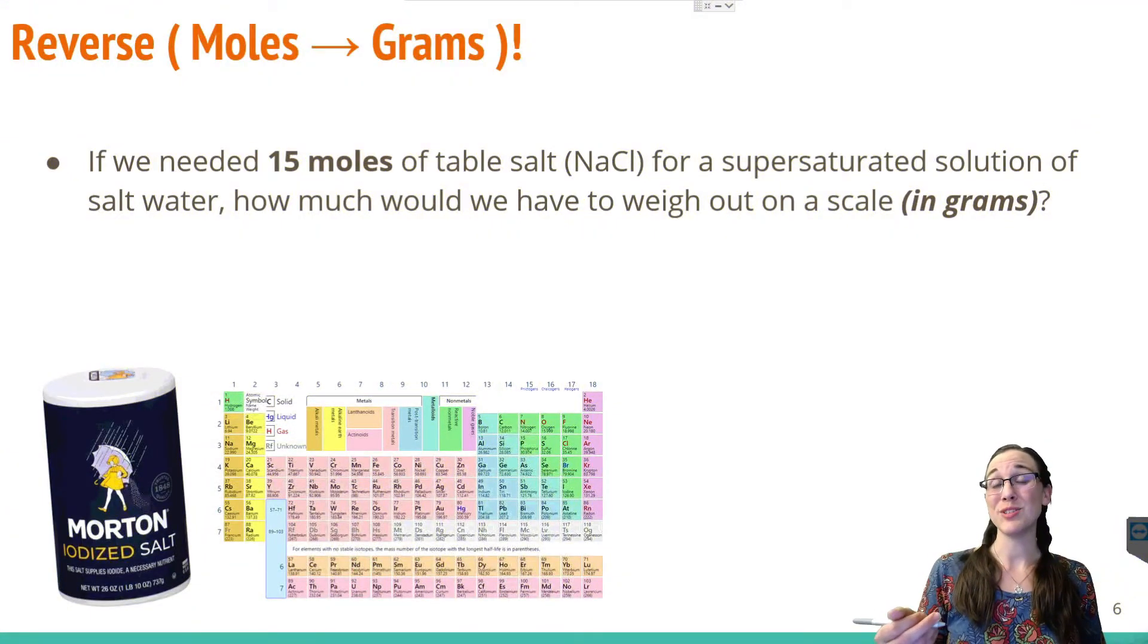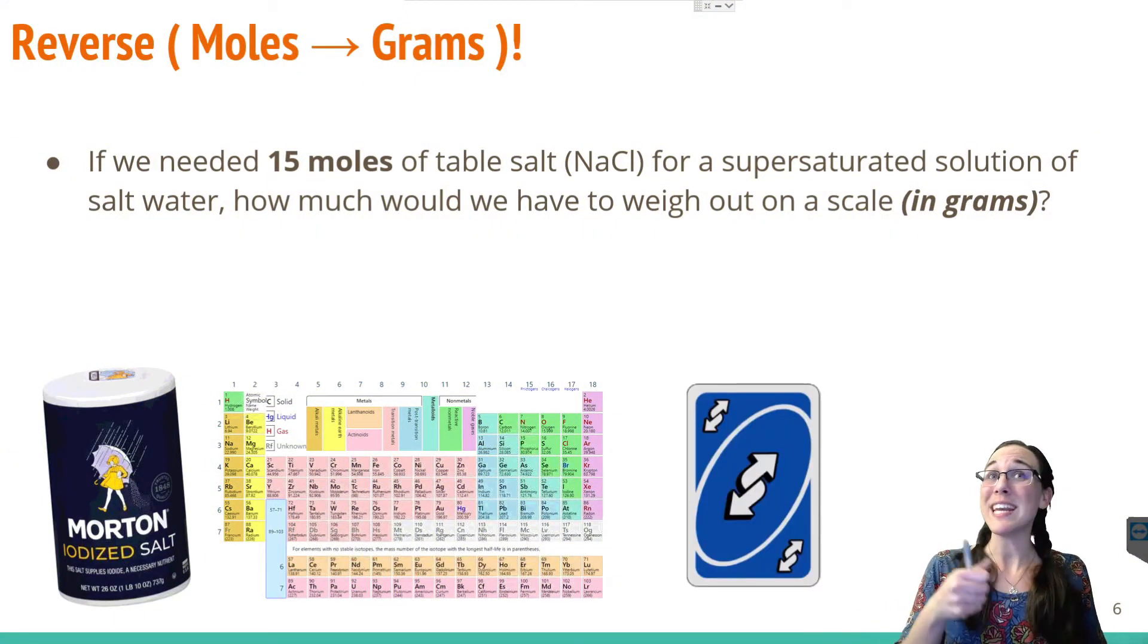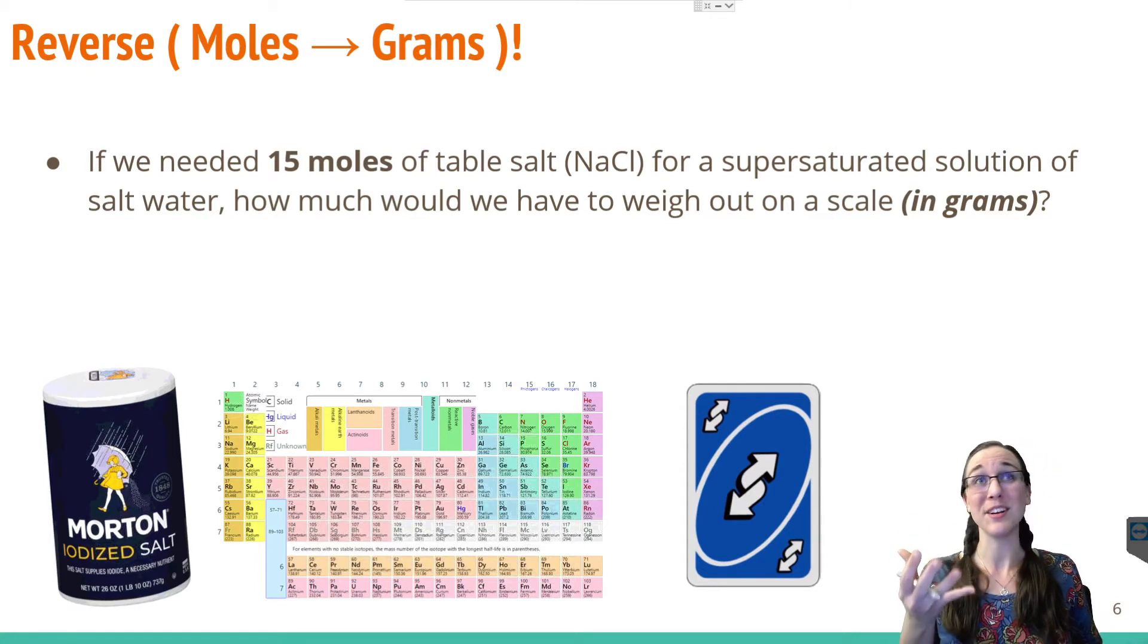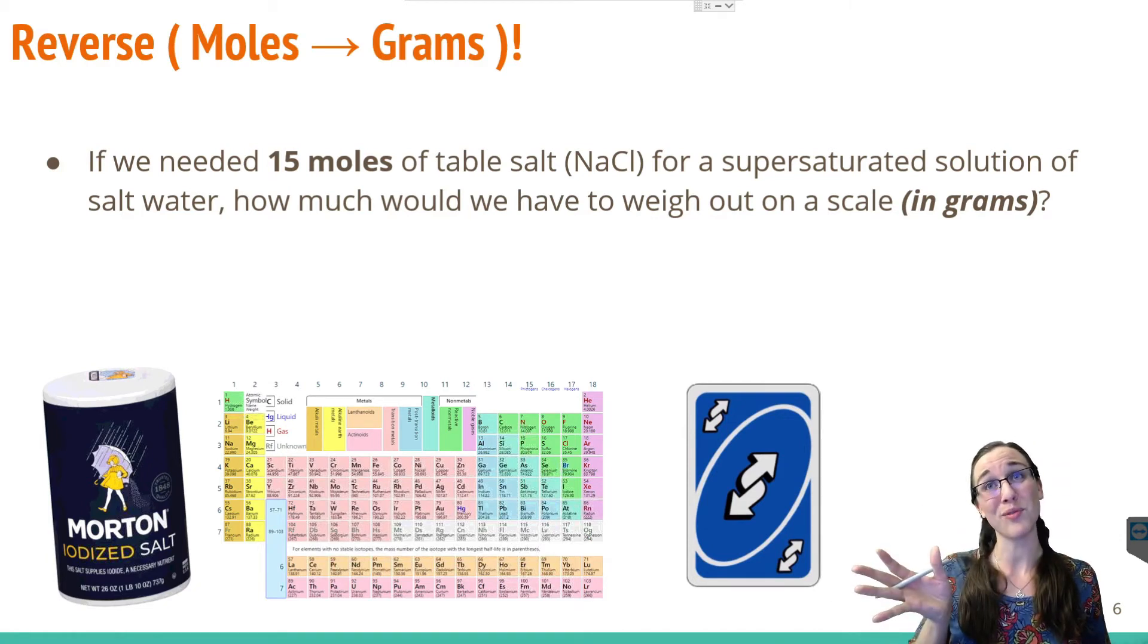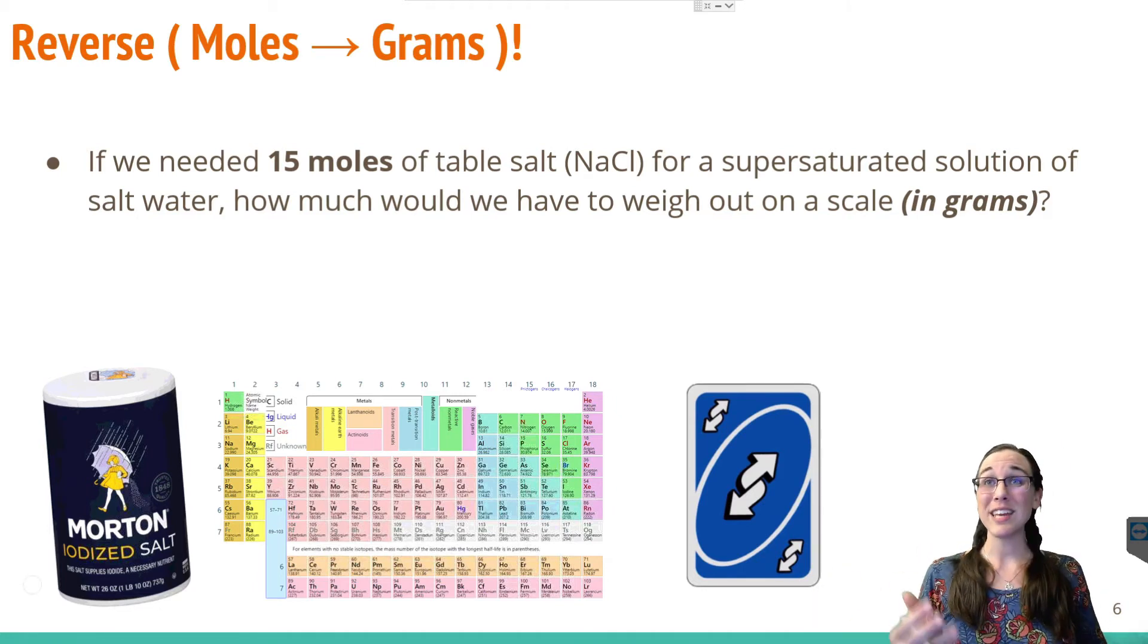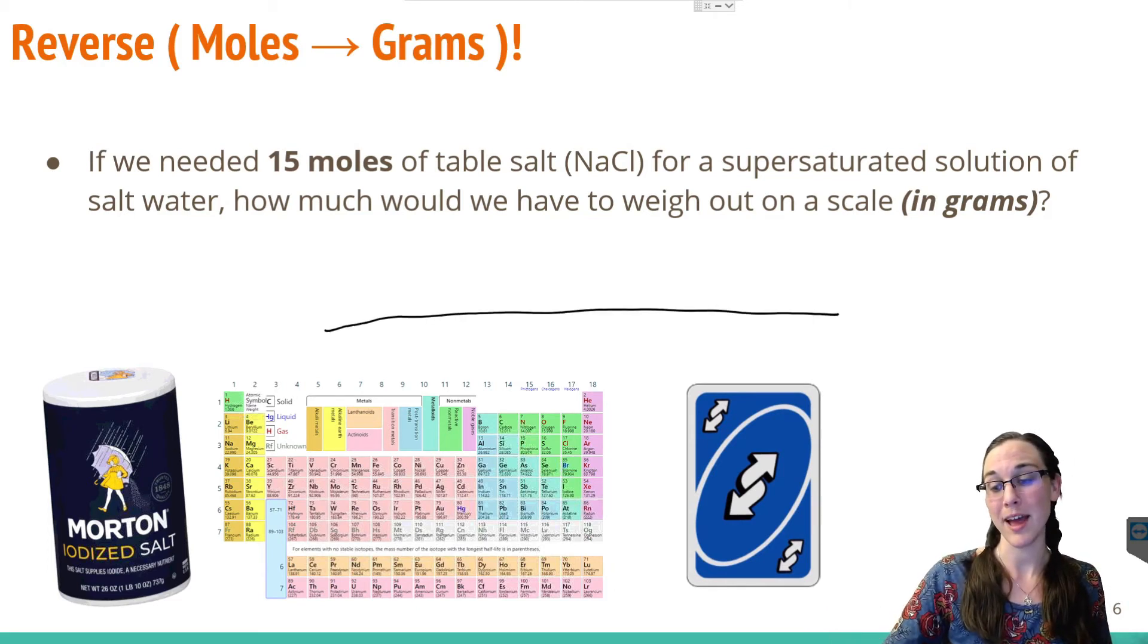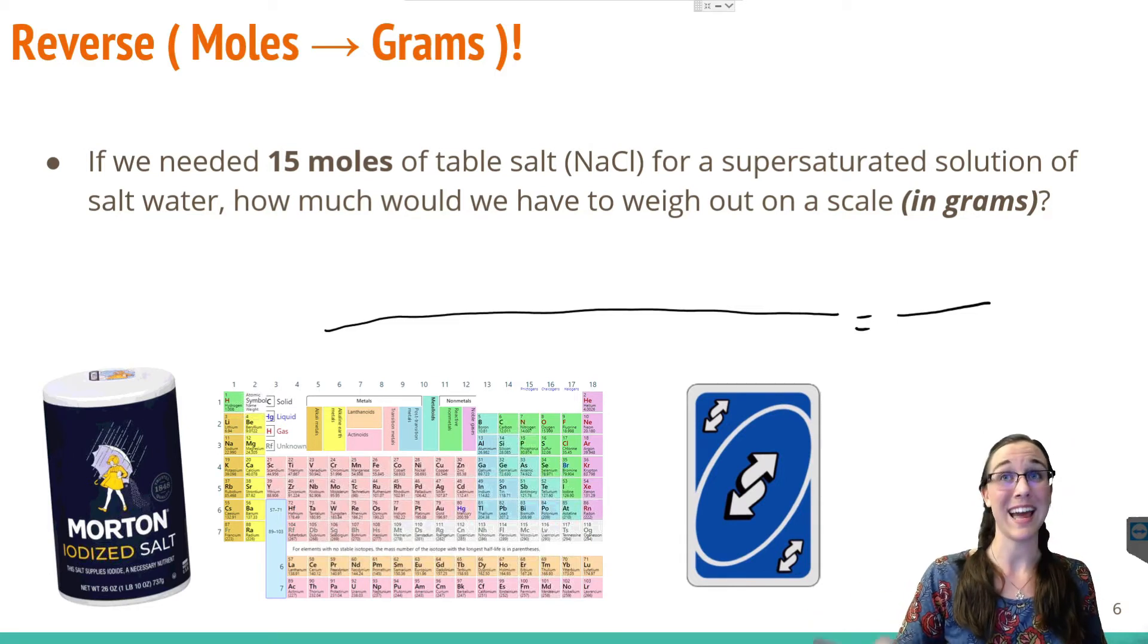Now what if I was asking you to do the reverse? What if I said we needed 15 moles of table salt for some super saturated solution we were going to make of salt water? How much would we have to weigh out on a scale in grams if we needed 15 moles? So in this case, we were given moles and we need to solve for grams. So same idea, but backwards. Since we're given one thing and they're asking us for something else, we know that it's dimensional analysis and we know we need to do our magical line to freedom format with our equal sign, space for our answer, and our goal units at the end.